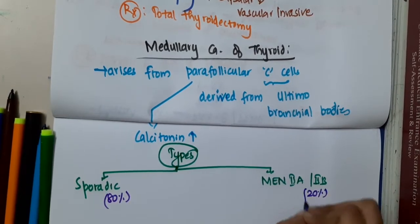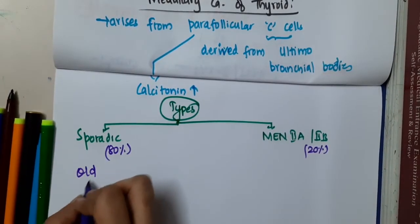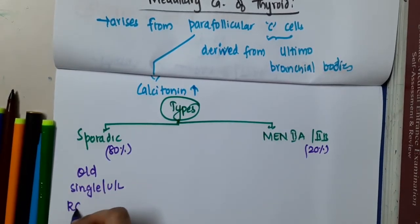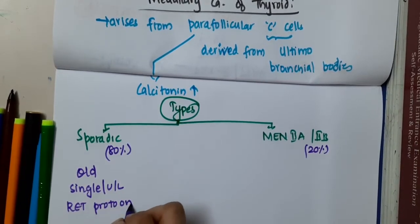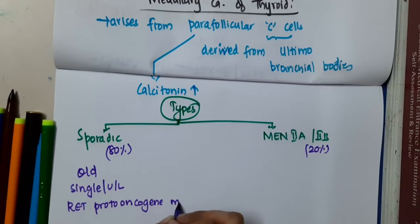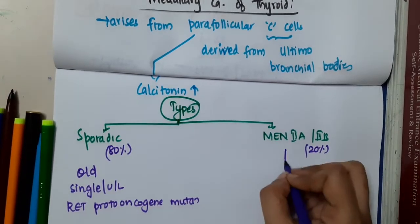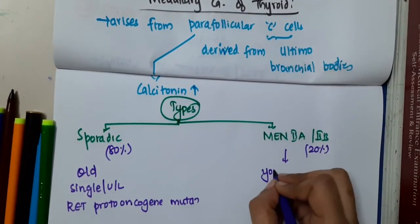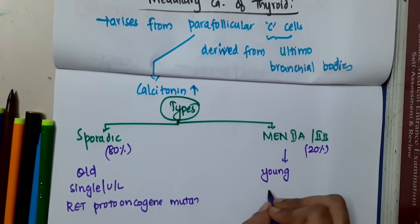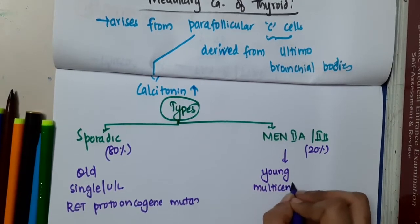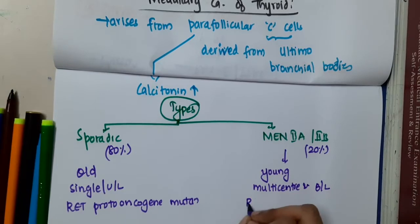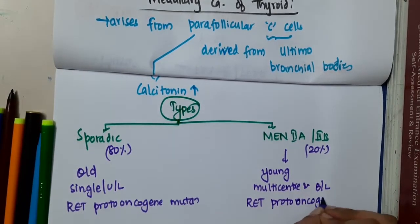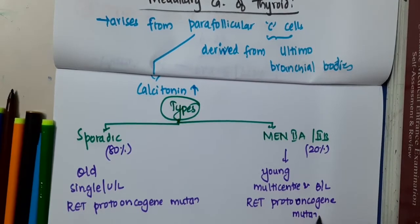MEN2A and MEN2B is seen in 20% of cases. The sporadic patient is older and has a single or unilateral lesion with RET proto-oncogene mutation. Whereas in MEN2A and MEN2B, it is seen in younger patients and the tumor will be multicentric and bilateral, and here also RET proto-oncogene mutation is seen.